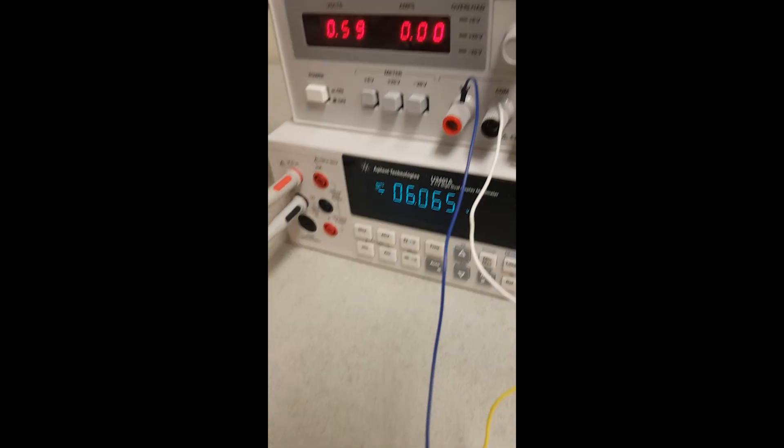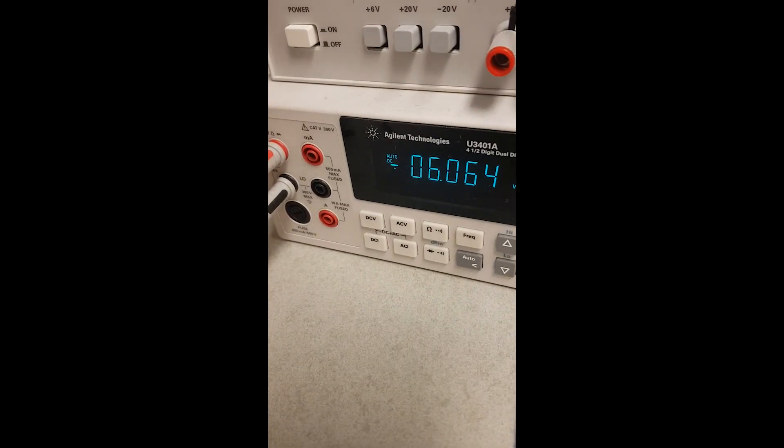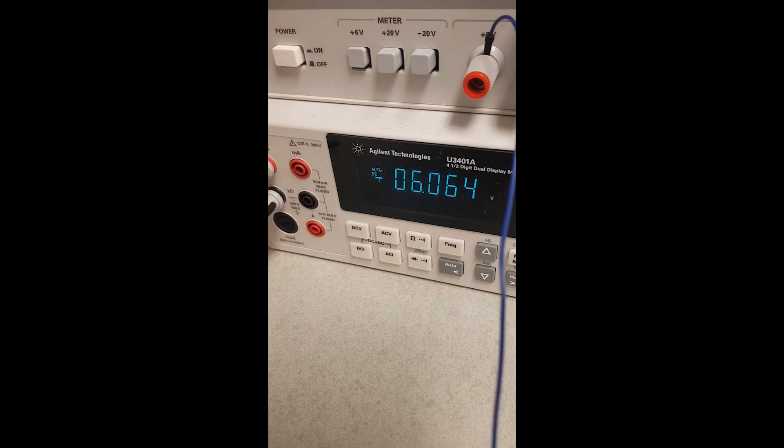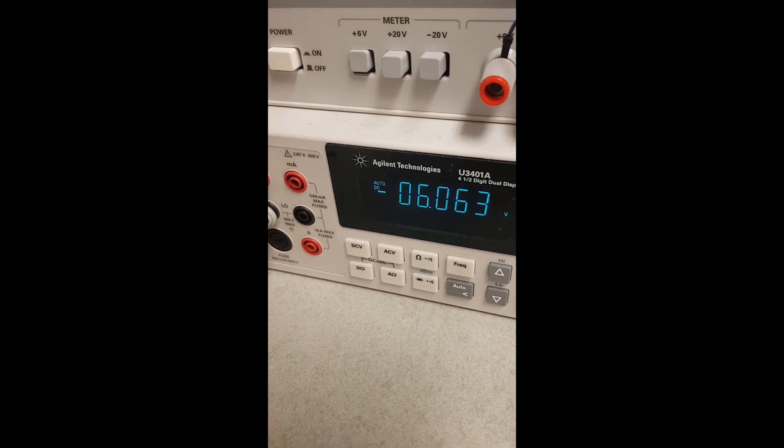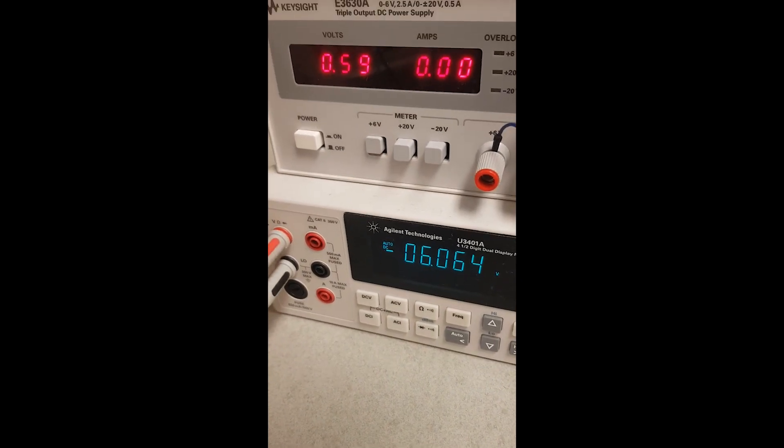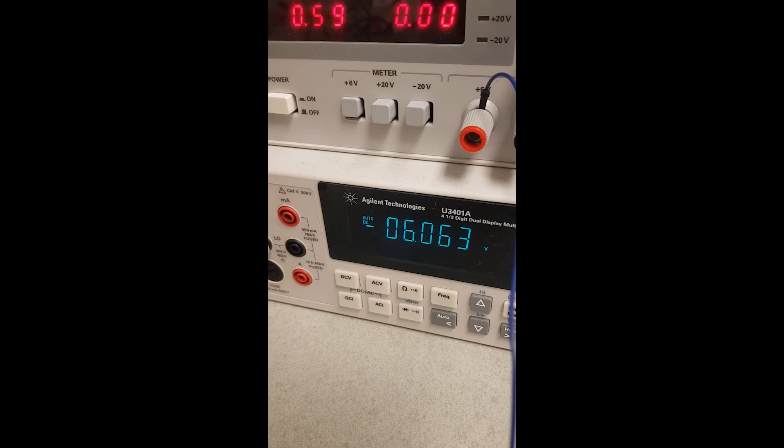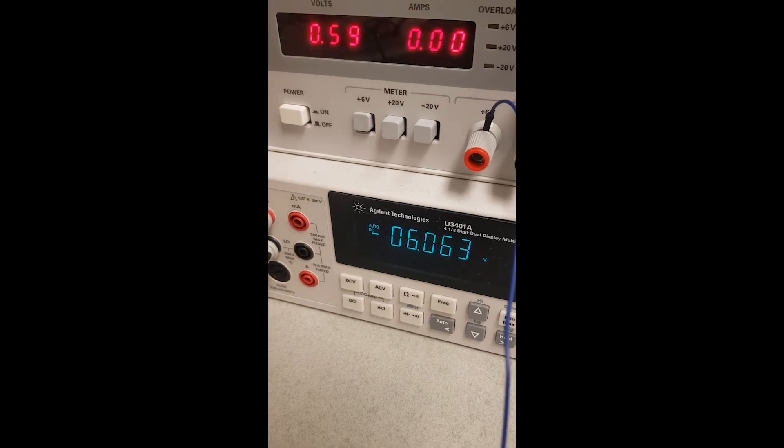So now let me turn it on. And this is your input. And you look here, the output is minus 6 volt. And that's what we expected. And inverting, so there is the minus sign here. An amplifier, it goes from 0.6 to 6 volt or a gain of 10.